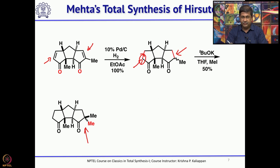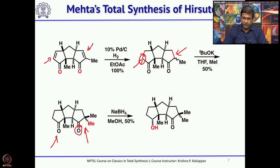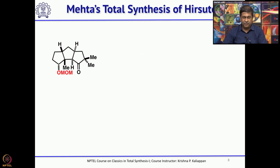After having this diketone, he needed to remove one carbonyl group. Between the two carbonyl groups, this one is more reactive — less sterically hindered compared to the other ketone. So he protected it through reduction: first reducing the left-hand side 5-membered ring carbonyl to an alcohol, then protecting that alcohol as a MOM ether using a base to get the corresponding MOM ether.